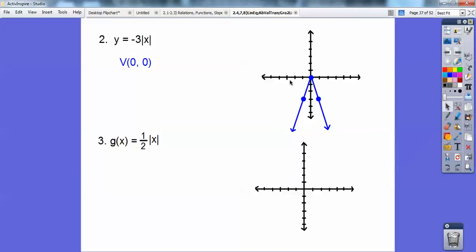How about this guy? This one's going to be wider. It's going up this time, centered at (0, 0) still. And this one's going wider. So instead of going over 1, up 1, it's going to go over 2, up 1. That's going to make it wider. There it is right there.